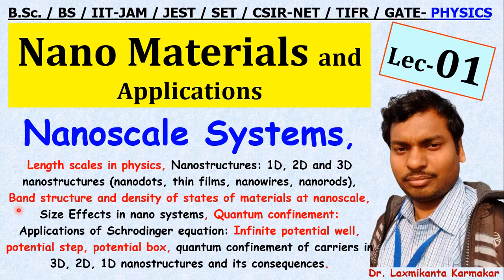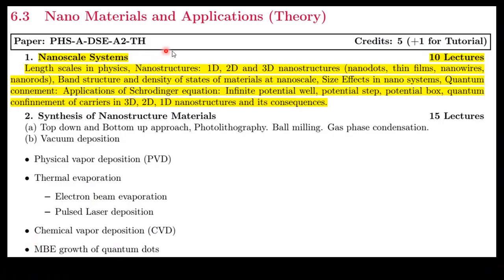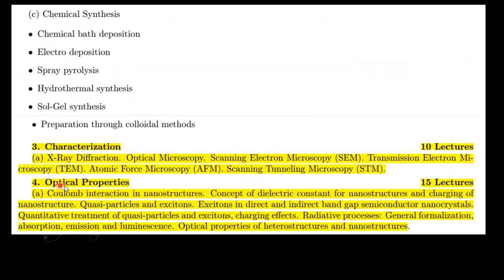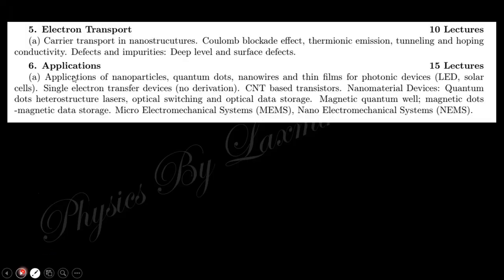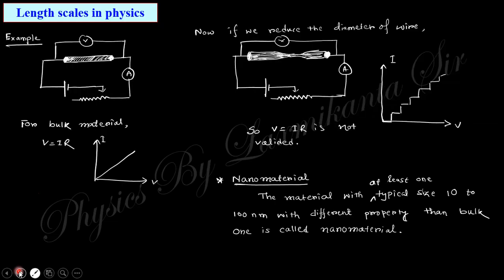Welcome to lecture number one on nanomaterials and applications. Today we want to discuss the nanoscale system — the length scale in physics, nanostructure 1D, 2D, 3D, nano dot, nanowire, band structure, density of states, size effect, and quantum confinement. This is the total syllabus for the sixth semester. In upcoming sessions we will cover synthesis, characterization, optical properties, electron transport, and applications.